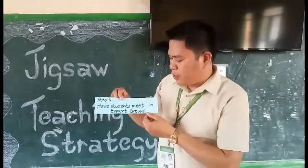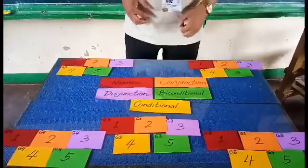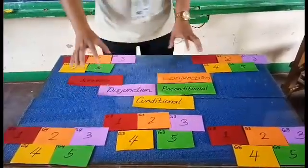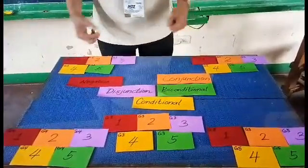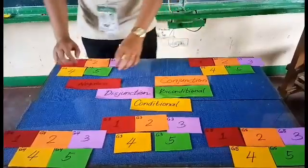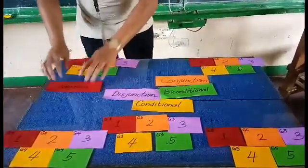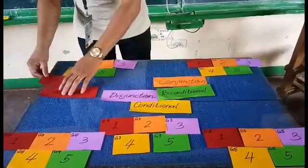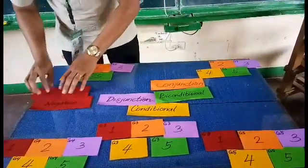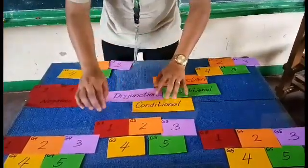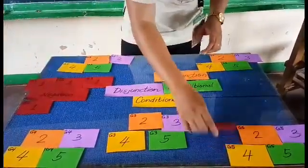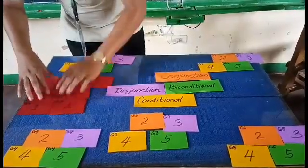Step number four: have students meet in expert groups. The experts on each particular topic are color-coded. For negation, the red color students proceed to the negation expert group. So student number one from group one, group two, group three, group four, and group five all proceed to the negation expert group.